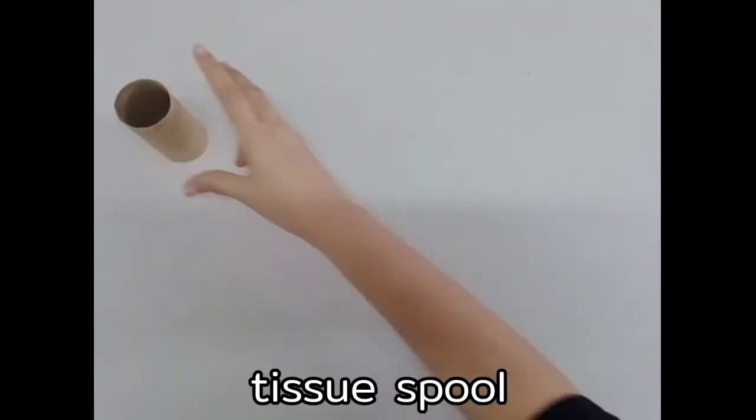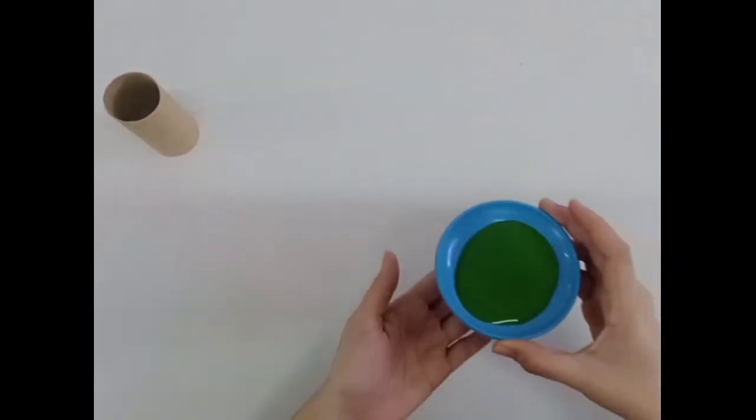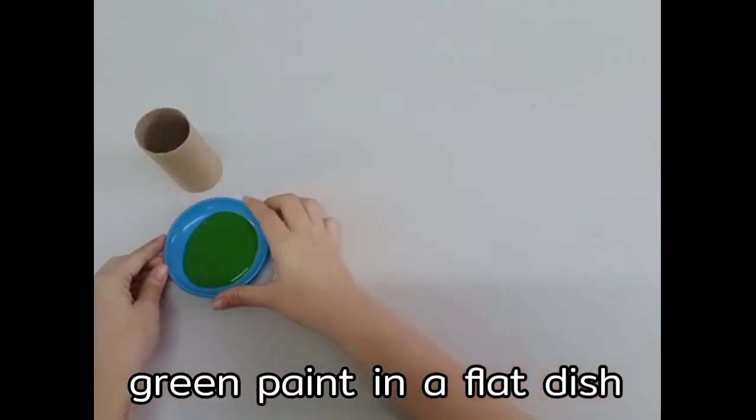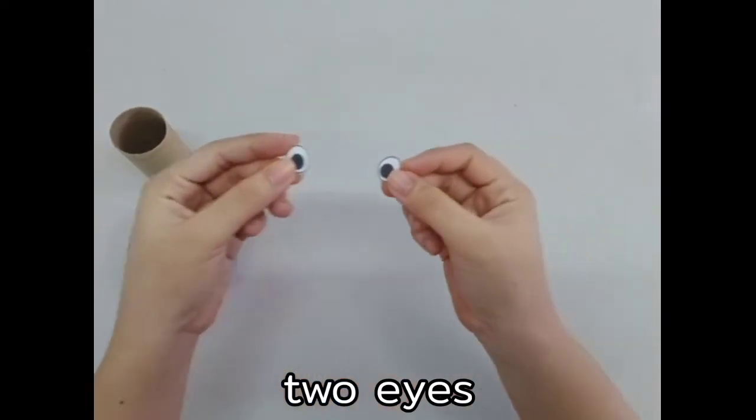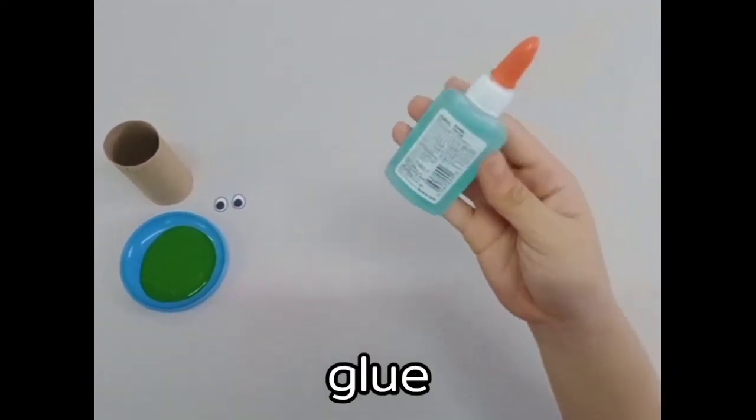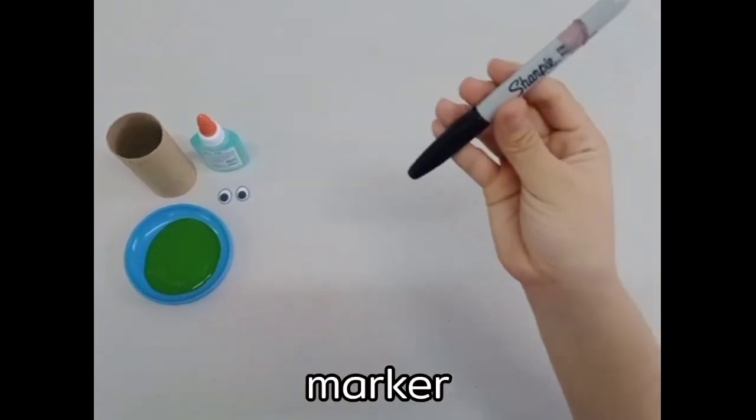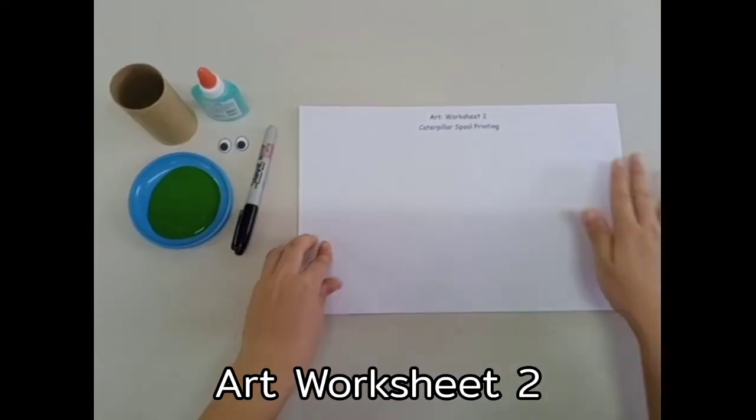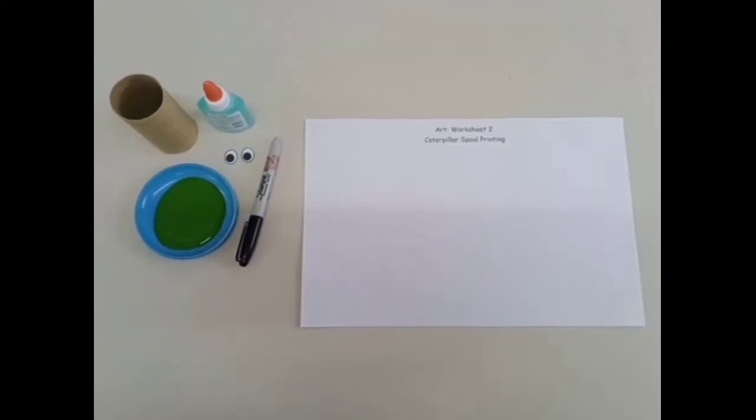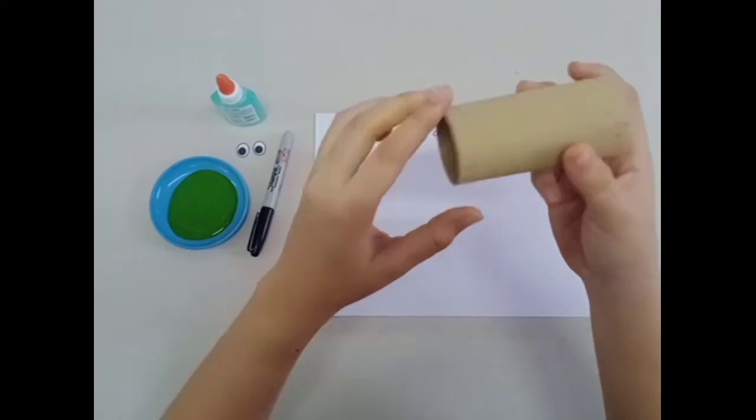The materials we will need are a tissue spool, the green paint that we made earlier mixing blue and yellow paints placed in a flat dish, two eyes, blue marker, and your art worksheet number two. Now let's begin, watch me.